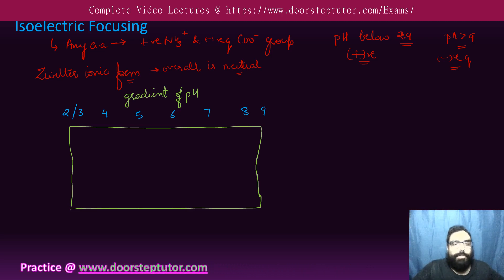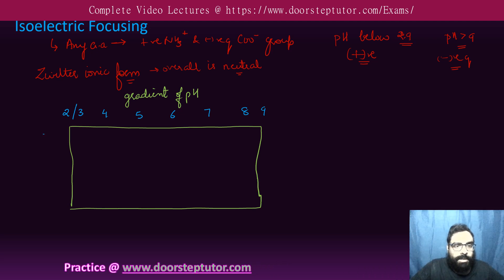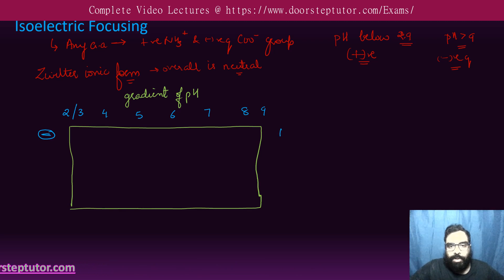Now what we will do, we will put the proteins. So we are actually separating the proteins in isoelectric focusing. We will put the proteins towards the negatively charged electrode, also known as cathode.